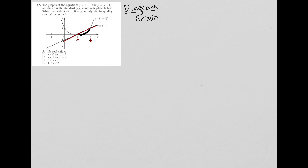So choice A says no real values. X is less than 0. X is greater than 1. That's definitely not true. X is less than 1. No. X is between 0 and 1. No. And then E, X is between 1 and 2. That is our correct answer.